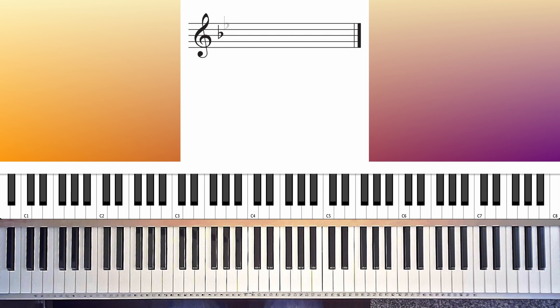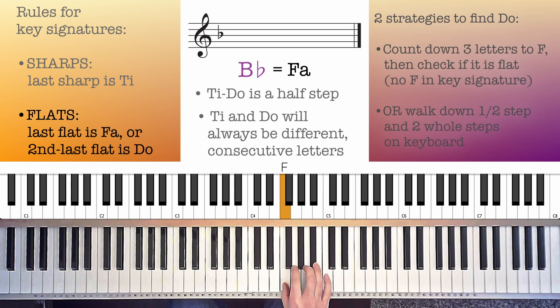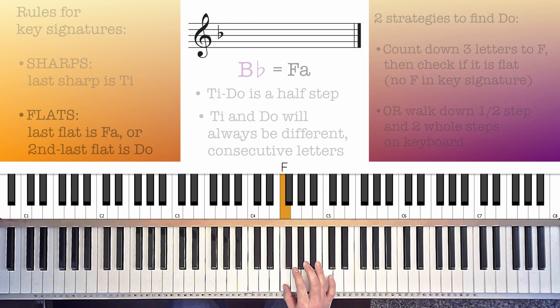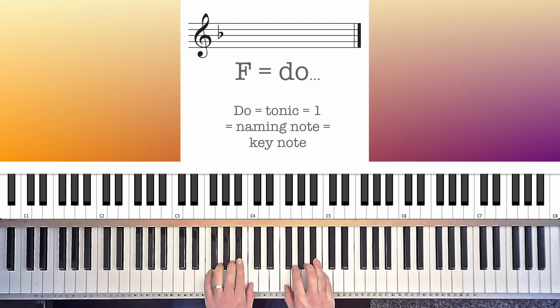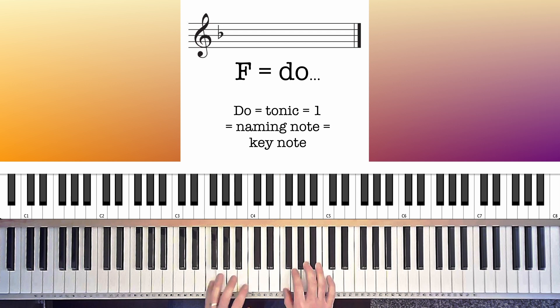Last example here, one flat, B flat, Fa, Mi, Re, Do is B flat, A, G, F. Check the key signature for the F, and of course F is not flat, because we only have one flat. This is the key of F major. And it's a good thing, because in this key, we can't use the rule that the second to last flat is Do, since we don't have a second to last flat.